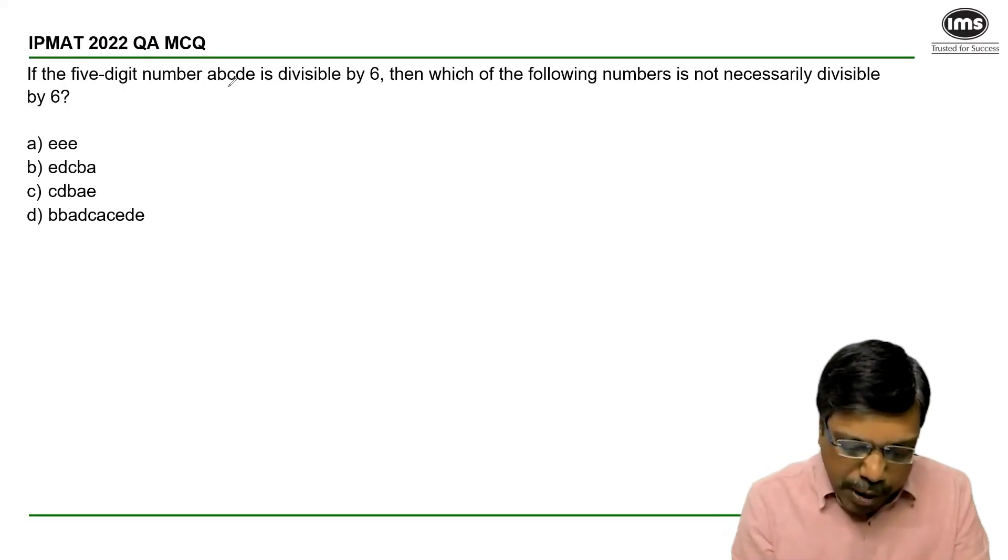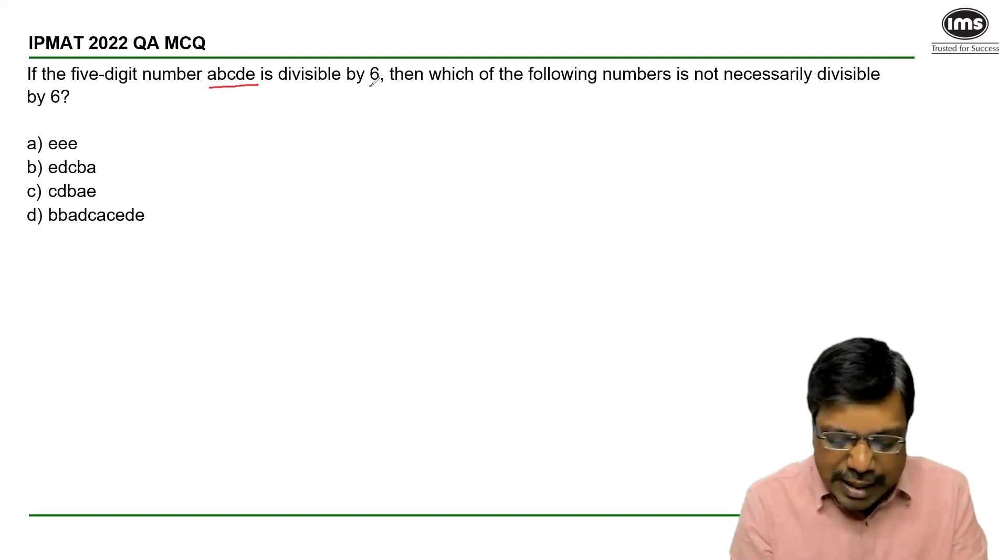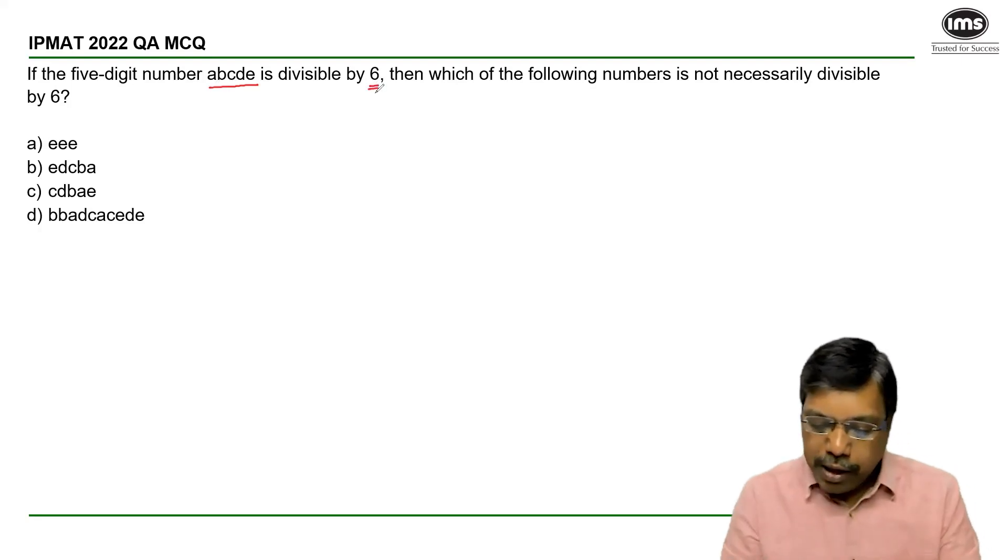The five-digit number A, B, C, D, E is divisible by 6. Then which of the following numbers is not necessarily divisible by 6?